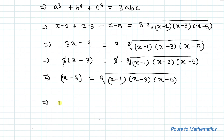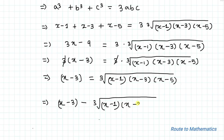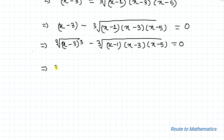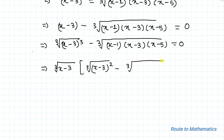Now I will take this term to the left hand side, giving us x minus 3 minus cube root of (x minus 1)(x minus 3)(x minus 5) equals to 0. In the next step, I can write x minus 3 as cube root of (x minus 3) cubed, so that the cube and cube root cancel, and we take cube root of (x minus 3) as a common factor.